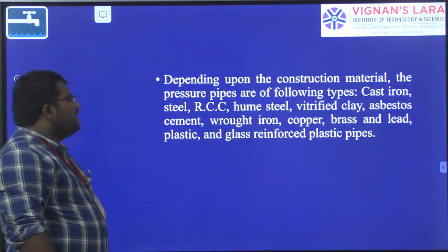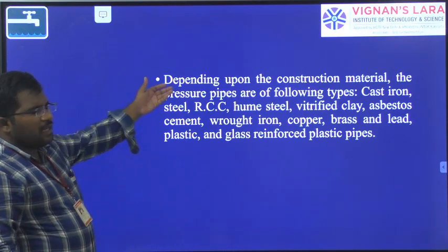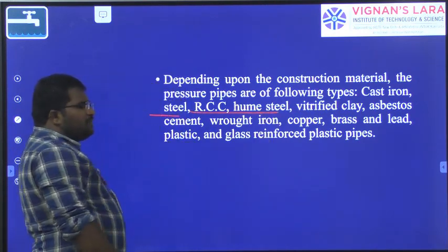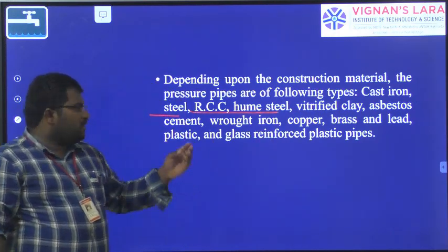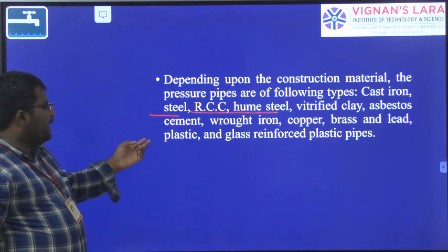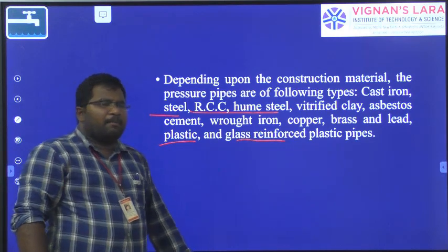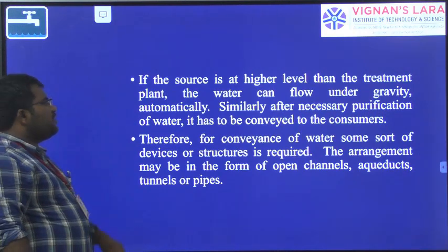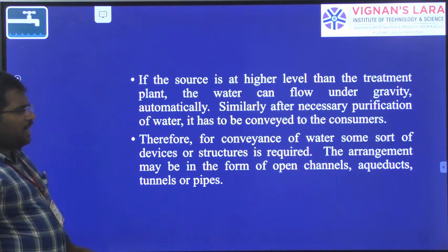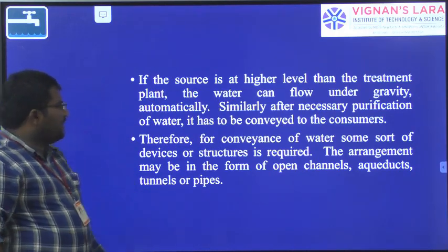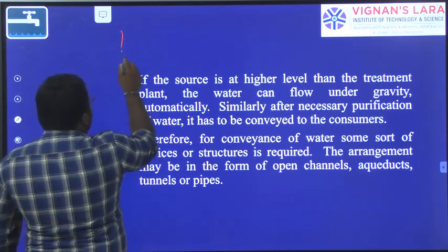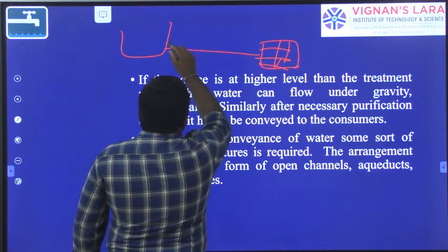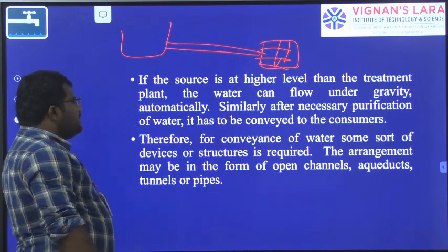Depending upon the construction material, pressure pipes are of various types. The materials used include cast iron, steel, CC, humphite, petrified clay, asbestos cement, wrought iron, copper, brass, lead, plastic, glass, and reinforced plastic. If the source is at a higher elevation compared to the treatment plant, water flows under gravity automatically. If the treatment plant is at a higher location and the town is at a lower location, water will flow by gravity.